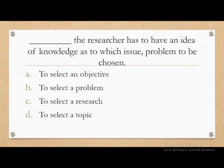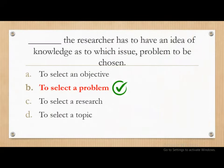Moving on. Dash — the researcher has to have an idea and knowledge as to which issue or problem is to be chosen. Options: to select an objective, to select a problem, to select a research, or to select a topic. The correct answer is to select a problem. The researcher must have an idea of knowledge as to which issue or problem is to be chosen.